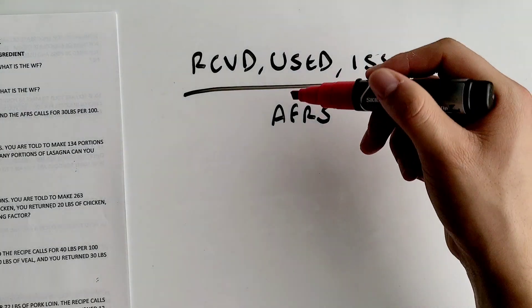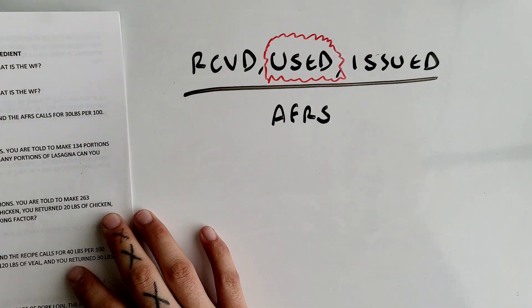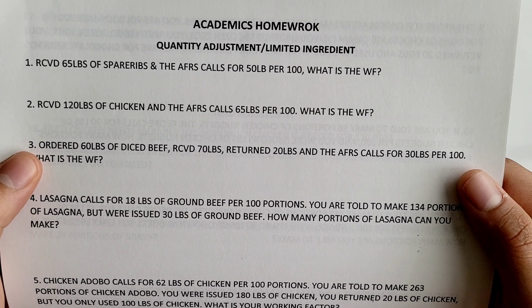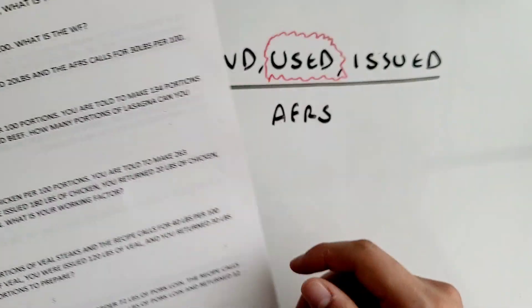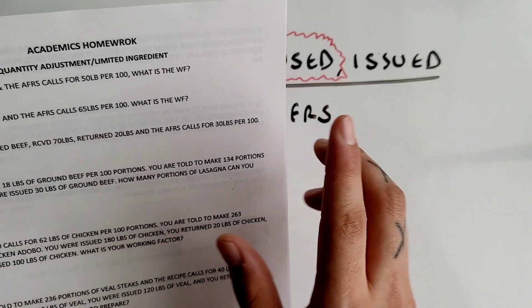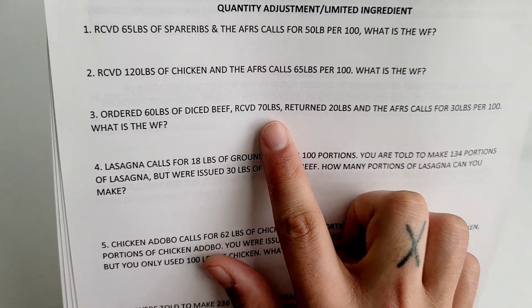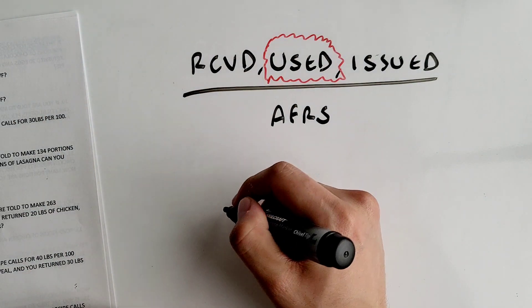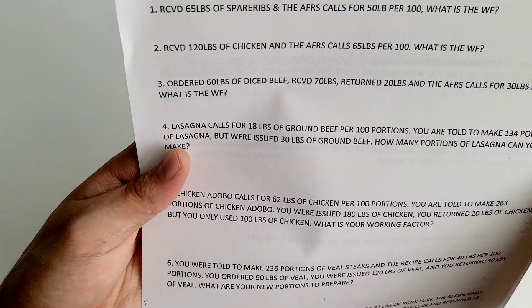When it comes to these word problems, the main word you want to focus on is 'used.' Number three says: you ordered 60 pounds of diced beef, received 70 pounds, returned 20 pounds, and the AFRS calls for 30 pounds per 100 — what is your working factor? So you focus on how much you actually used: you received 70 pounds and returned 20, so you used 50 pounds (70 minus 20).